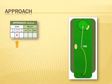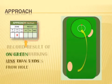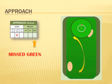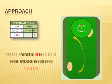Since our approach shot on this first hole was 145 yards away, we mark the center box. Next you record the result of the shot by marking one of three boxes: on the green less than 5 yards from the hole, on the green more than 5 yards from the hole, or your approach shot missed the green. With Power Tracker everything is in yards, so remember less than 5 or more than 5 means yards, not feet. After hitting our approach shot, we find our ball just short of the green, so we mark the MG box for missed green.